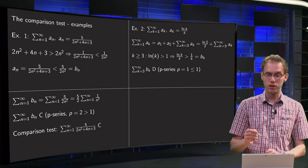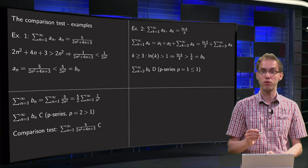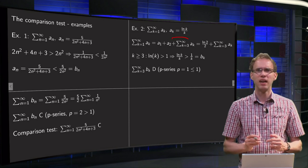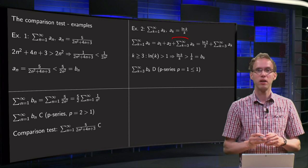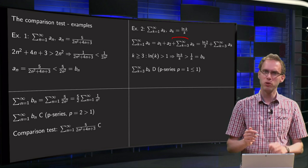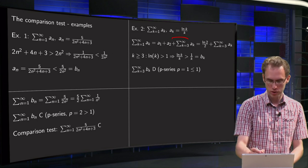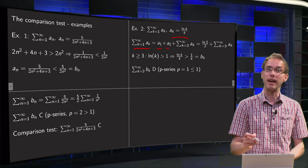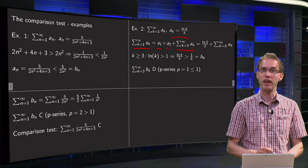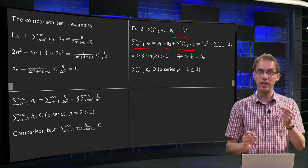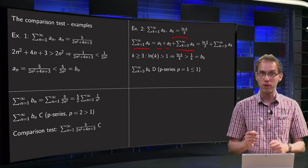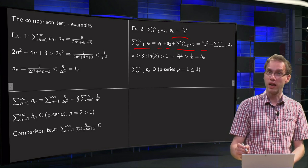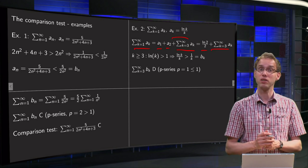Next example. Sum from k equals 1 to infinity of ak, where ak equals ln of k over k. And this is slightly annoying, because we want to estimate ln of k. We say, well, my sum k equals 1 to infinity of ak equals a1 plus a2, and then I start at 3, k equals 3 to infinity ak. If you plug in 1 you get ln 1 over 1 equals 0, and if you plug in 2 you get ln 2 over 2. So only the a2 is left over here, and our sum from 3 to infinity.